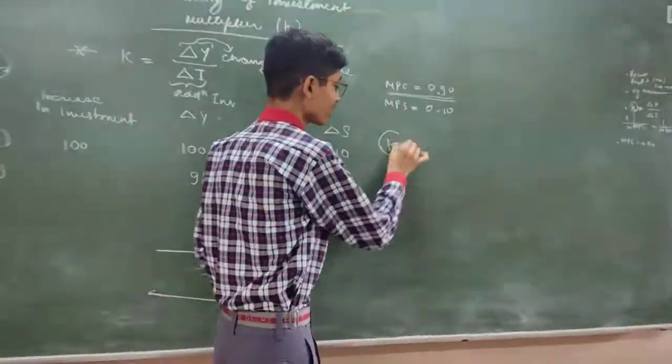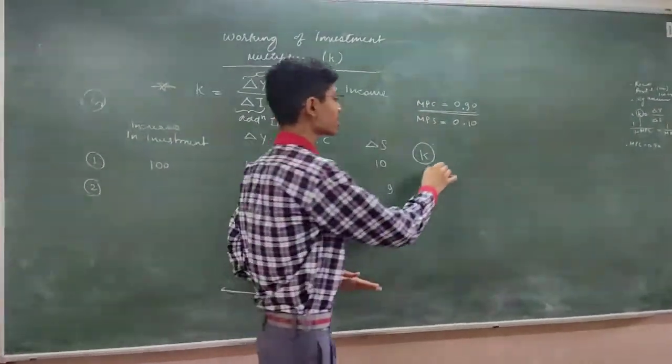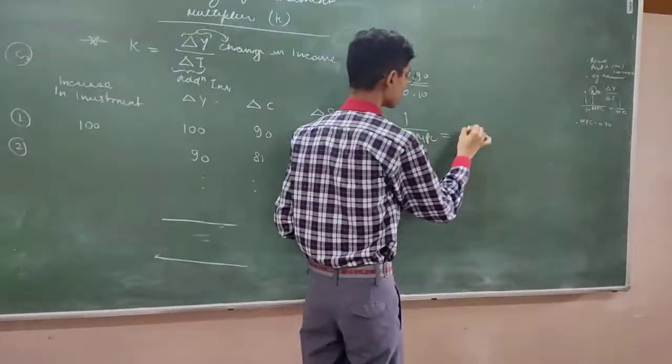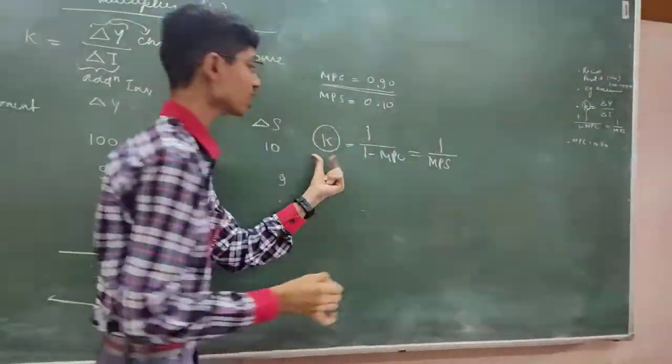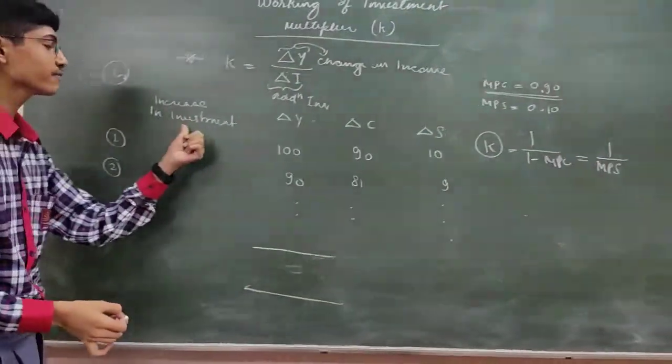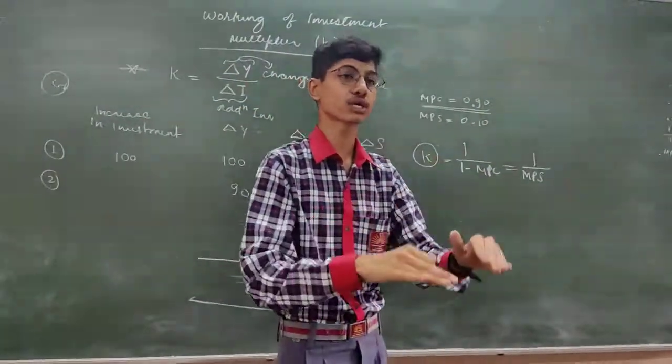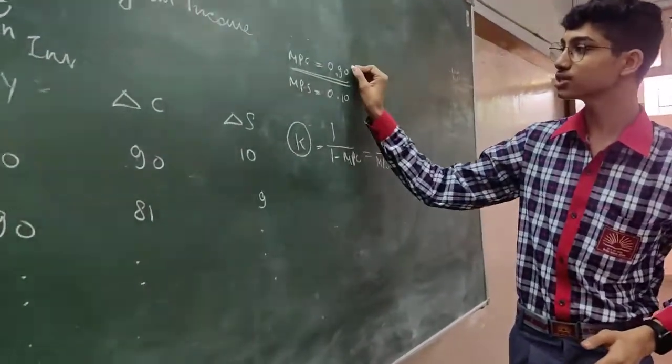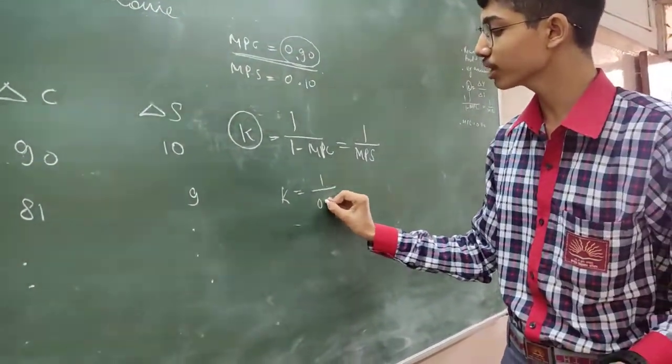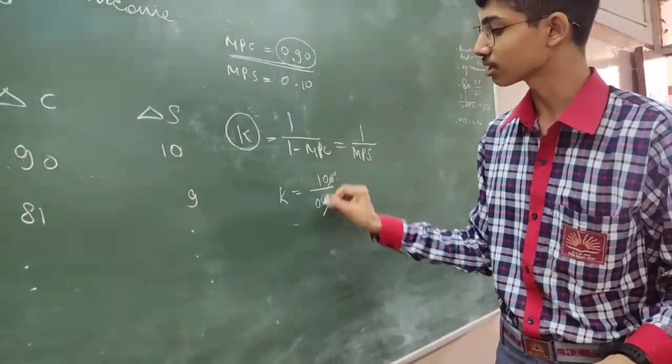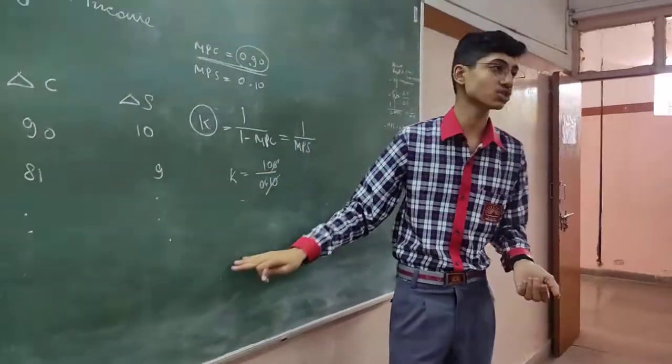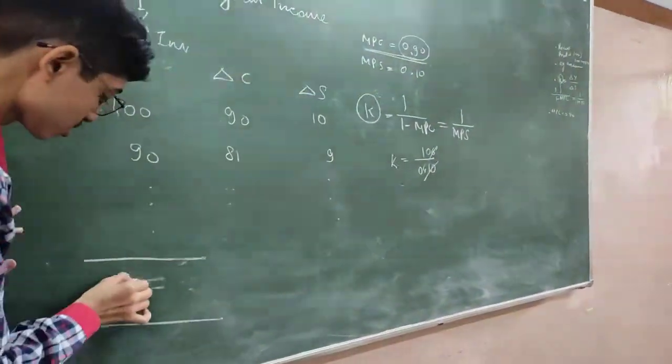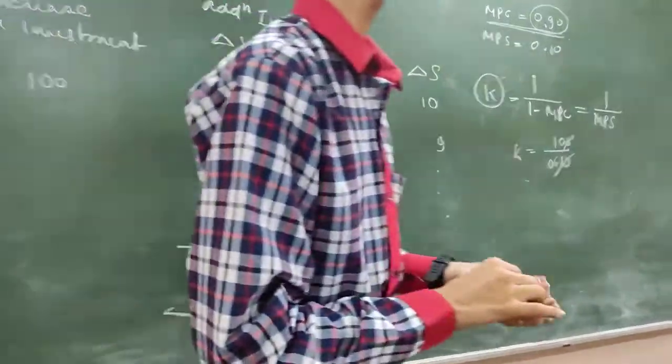I am going to show this topic. What is our formula? We have MPC and MPS tables. K is equal to 1 upon MPS. So we can find K value. If we have K value, then we will have additional investment, and we can see that total income can be generated from additional investment. So if MPC is 0.90, then our K value is 1 upon 0.10, that is 10. Then our multiplier is 10. That means if we take all the rounds together, multiplier is 10 and investment is 100, then our total income generated is 1000.